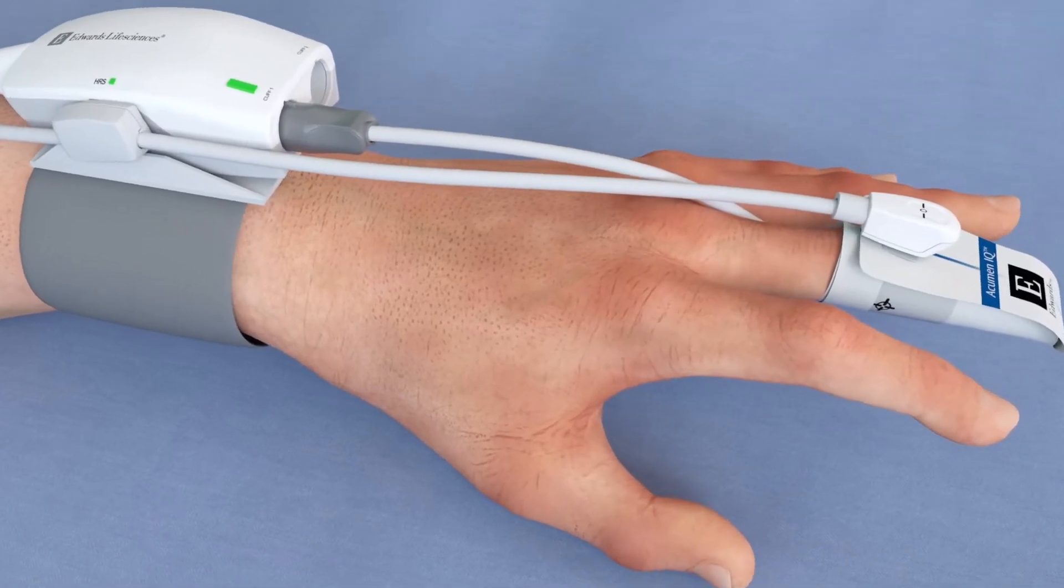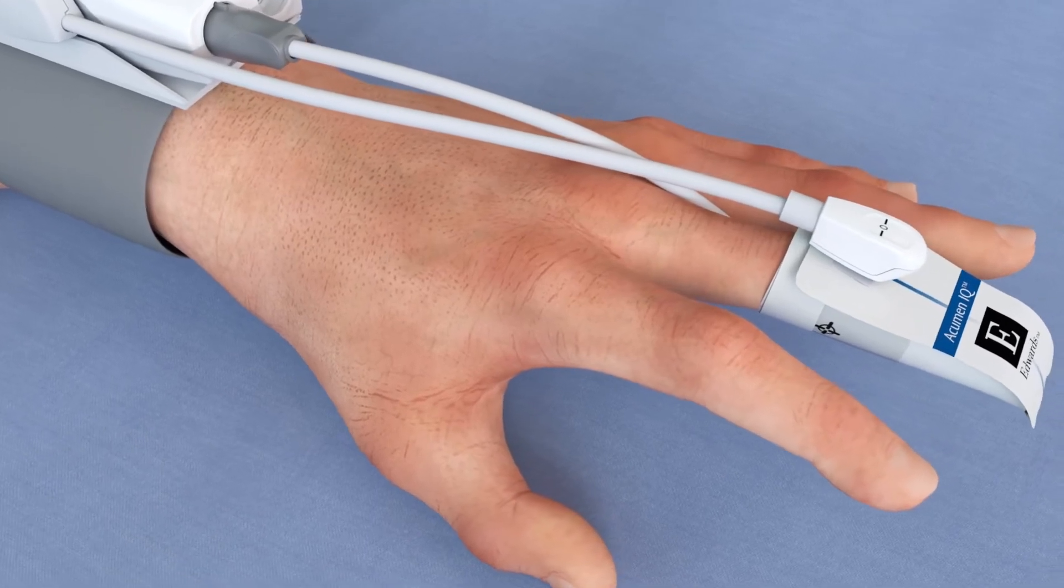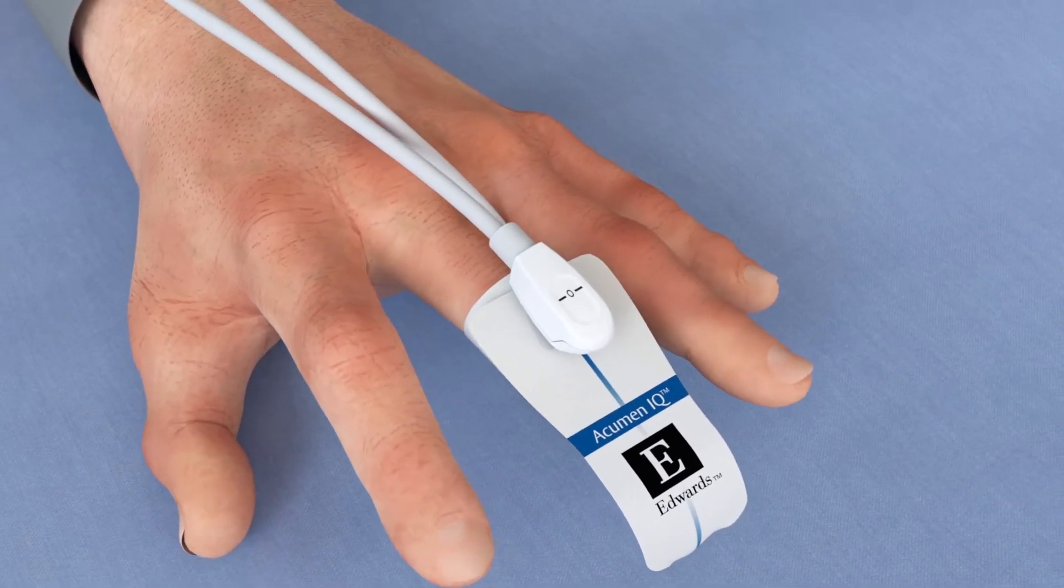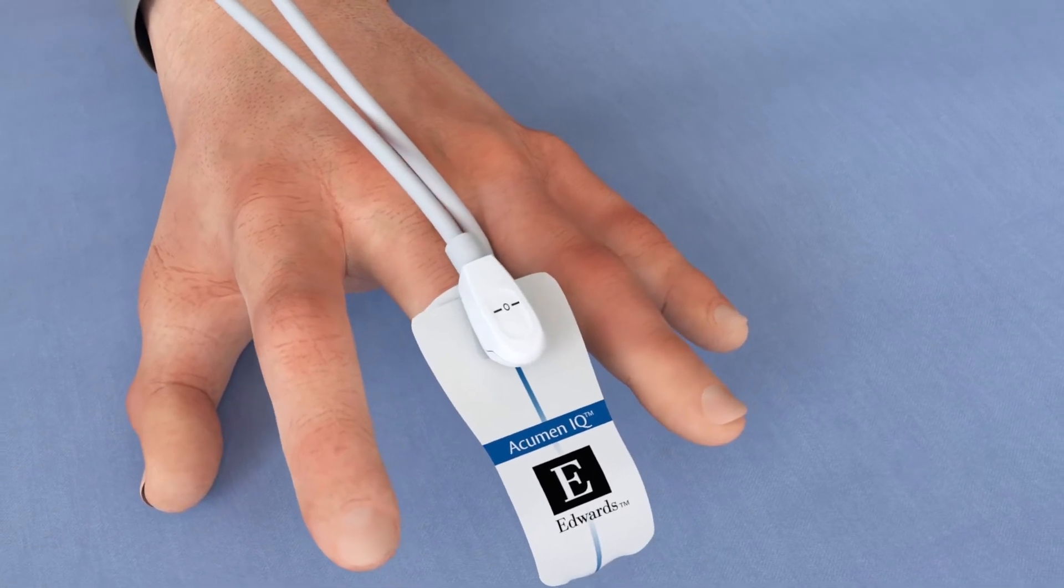The AcumenIQ Finger Cuff is designed for single patient use. Upon starting a measurement, the finger cuff can be used and reapplied for up to 72 hours on one patient.